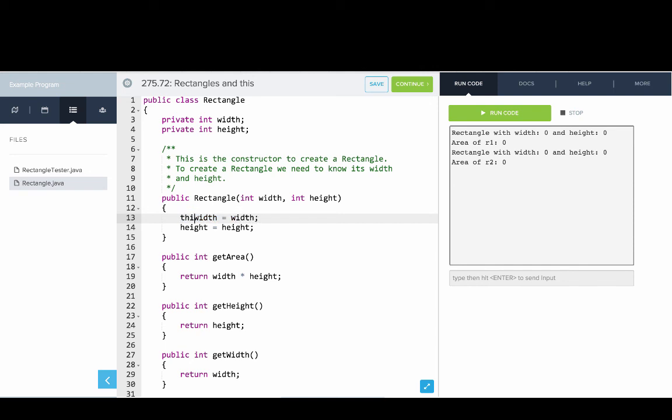What we're gonna do now is we're gonna use our keyword this. Say this.width and this.height. This.width, remember, this refers to the current object, so it's setting the instance variable called width on the current object. Let's run this and you can see that it's working as we expected.